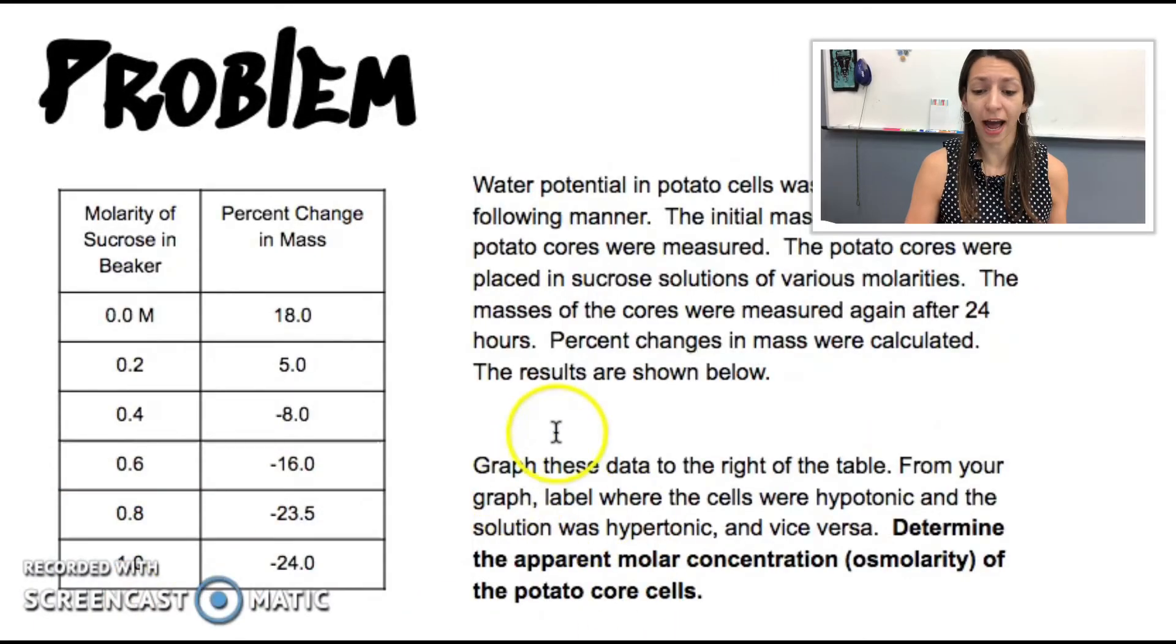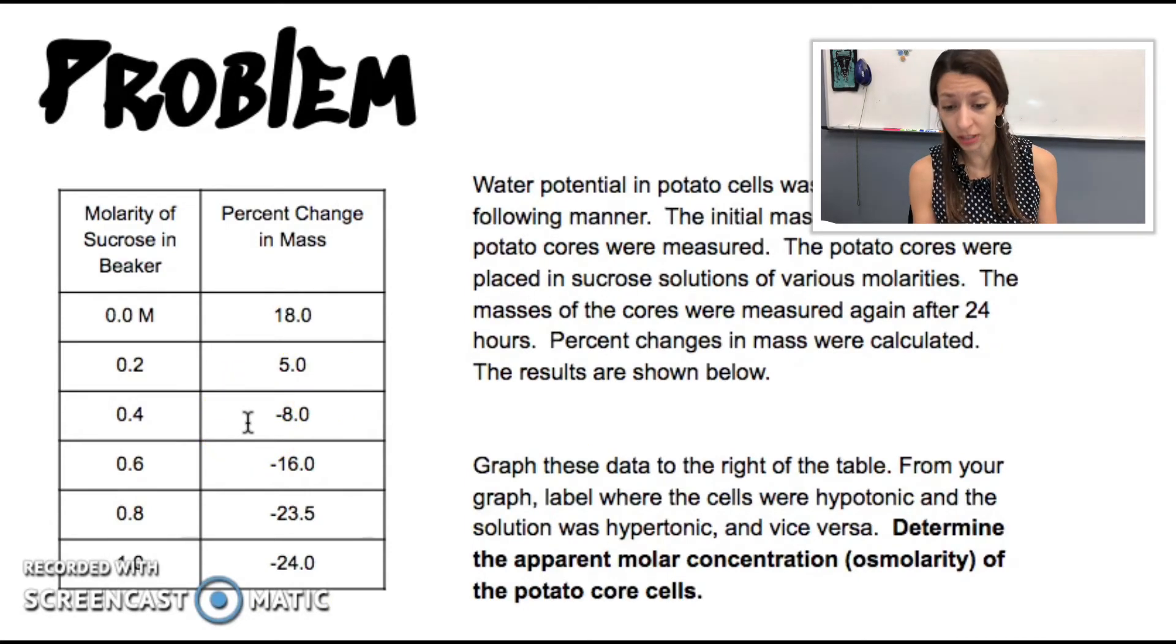So going back to our original problem, what we're asked is to graph these data to the right of the table, and then you're going to label where the cells were hypotonic and the solution was hypertonic and vice versa, and then determine the apparent molar concentration or osmolarity of the potato core cells. So we're going back here. You'd first have to make a graph, label where the cells are hypotonic and hypertonic, and the opposite for the solution, and then determine the apparent molar concentration.